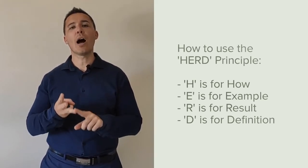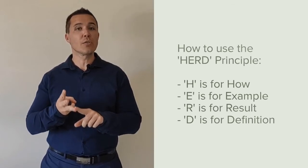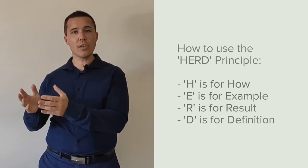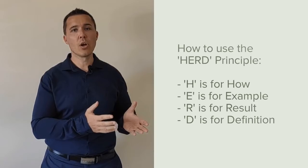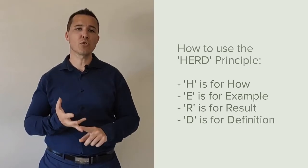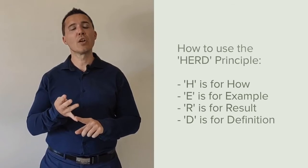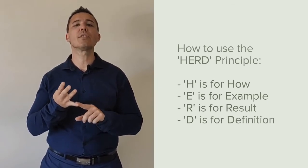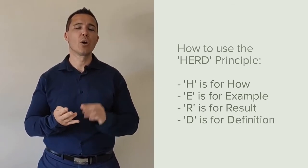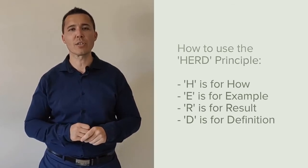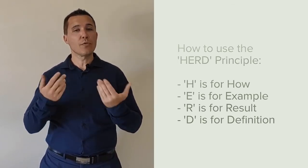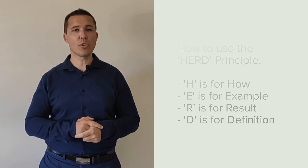Next, you want to do R - Result. This may be a positive or negative consequence, or may result in something measurable. And the last one, D - Define. You want to give a definition of the process. Always give a definition. So if you use the HERD Principle when you see outline or explain, you're going to be okay.